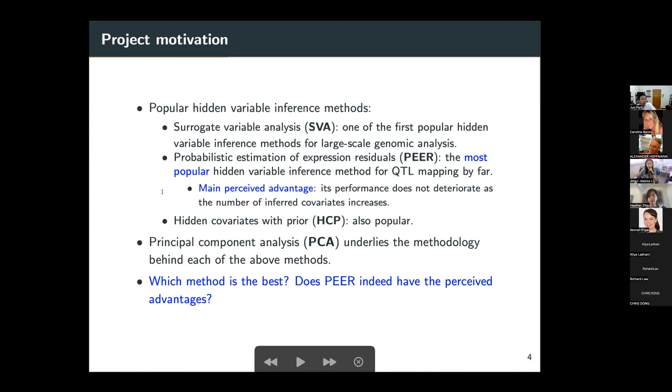The main perceived advantage of this method is that its performance does not deteriorate as the number of inferred covariates increases. So the perception is that this method sort of does not overfit. And another popular method is called hidden covariates with prior. These three methods were developed between 2008 and 2013 or so, and are still very popular now.